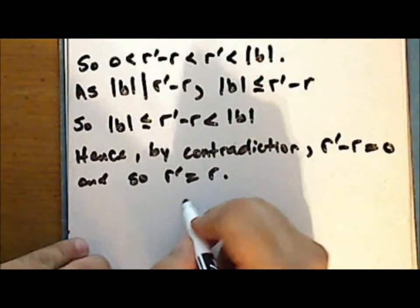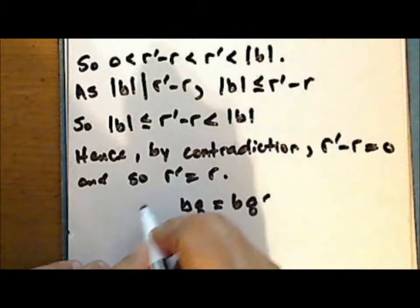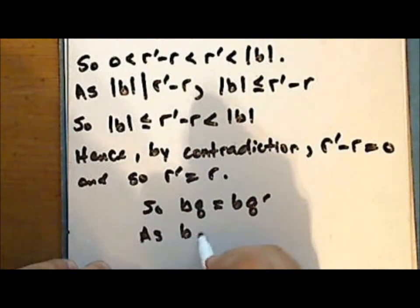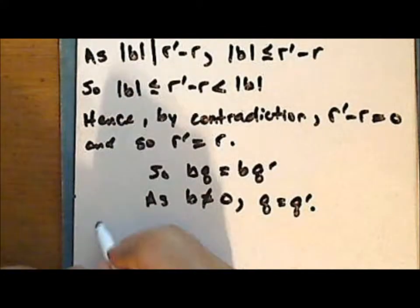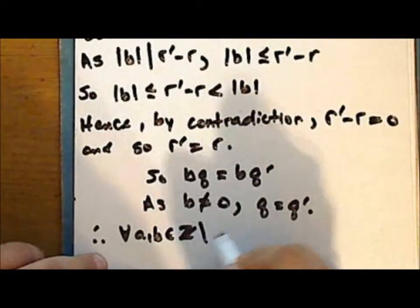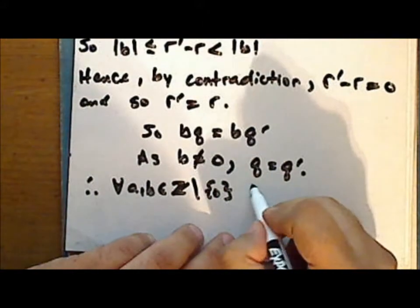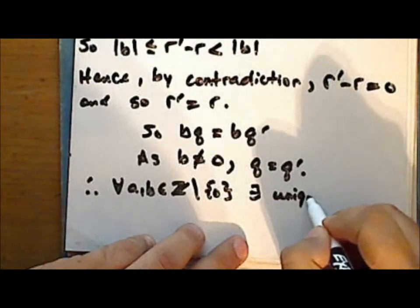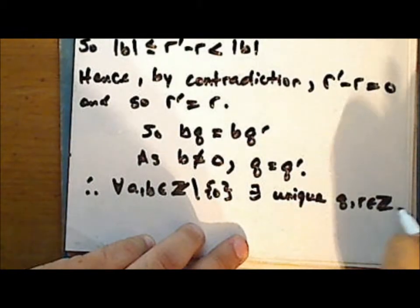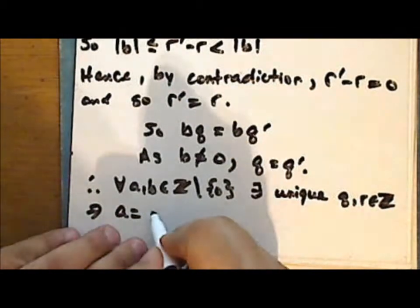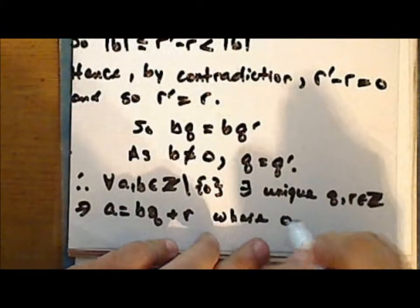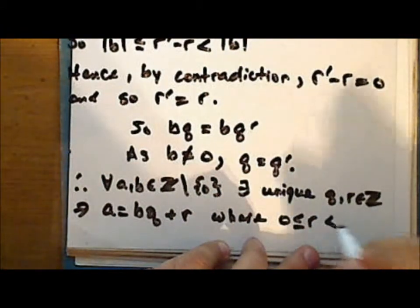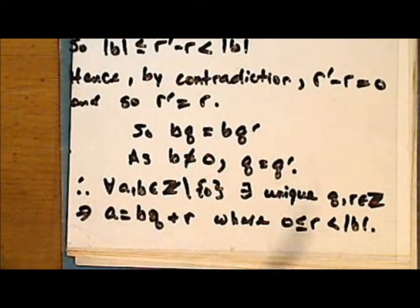And because r prime equals r, we have that b times q equals b times q prime, and as b is not zero, we have that q equals q prime. So we have demonstrated that for every two non-zero integers, there exist unique integers q and r such that a is the product of b times q plus the remainder r, where r is non-negative and strictly less than the absolute value of b.